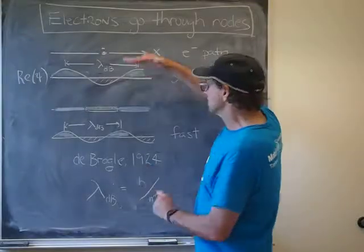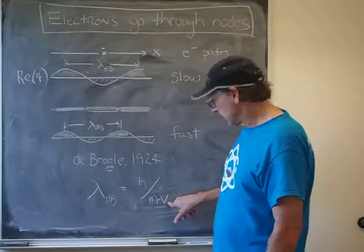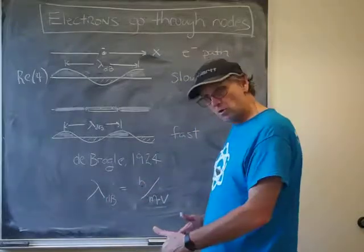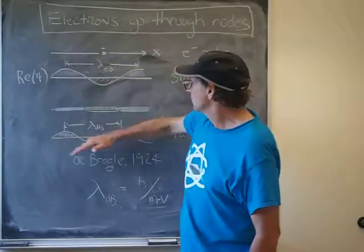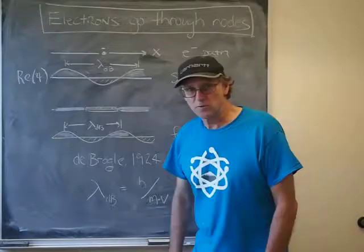So you can see how this must have all played out, because as we make the speed bigger, that must mean that the wavelength, the de Broglie wavelength, is smaller. And that's exactly what we saw here, going from this slow electron to this fast electron.